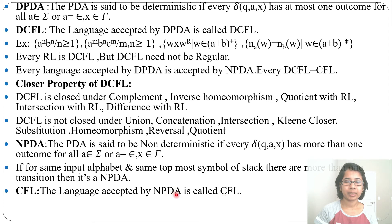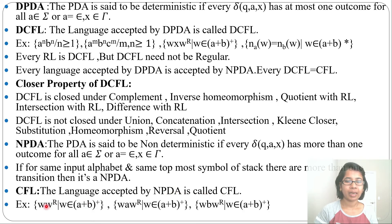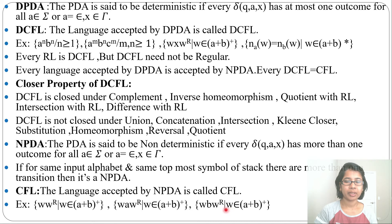We do not say it is non-deterministic context-free language because by default context-free language is accepted by NPDA. Some examples of languages accepted by NPDA are: w w-reverse where w belongs to (a+b)+; w a w-reverse where w belongs to (a+b)+; and w w where w belongs to (a+b)+. These are examples of non-deterministic context-free languages accepted by NPDA.